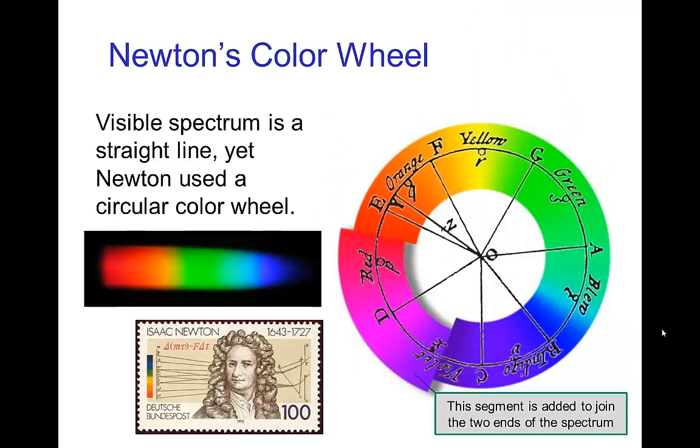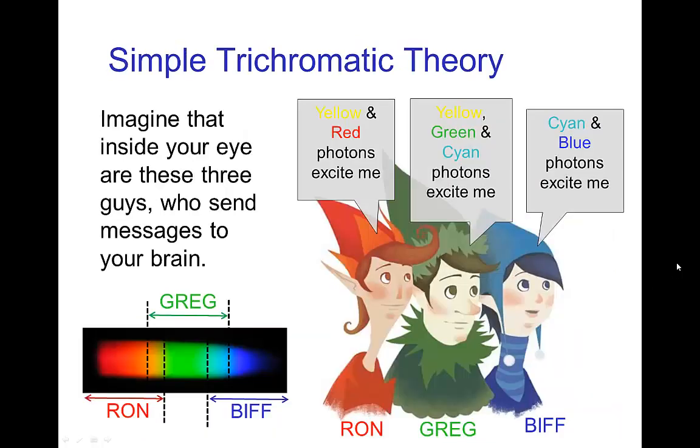Now Isaac Newton, who studied mechanics and gravity and calculus, he spent a lot of time studying color and he did some of the first experiments with prisms to separate the spectra. And he organized color in the same way as painters in his time did, which was in a color wheel. So even though the spectrum was a straight line, he formulated a color wheel and the two ends of the spectrum are connected by the parts of the colors which are the non-spectral colors, most notably magenta.